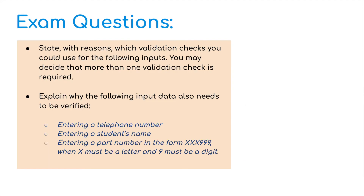Let's finish with some exam questions. There's an exam question in two parts looking at both validation and verification. State with reasons which validation checks you would use for the following inputs — you may decide that more than one validation check is required — and explain why the following input data also needs to be verified. The inputs are: entering a telephone number, entering a student's name, and entering a part number in the form of three letters and three digits, where X represents a letter and 9 represents a digit.